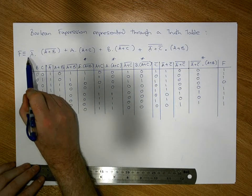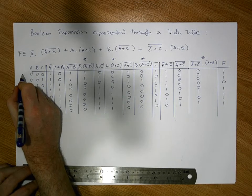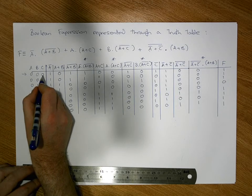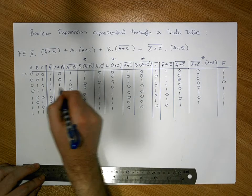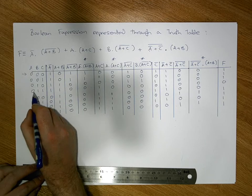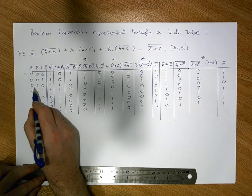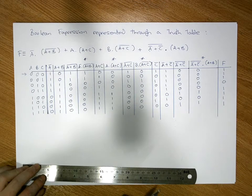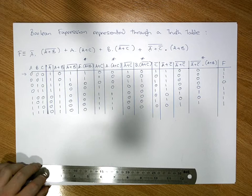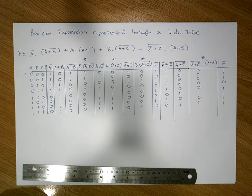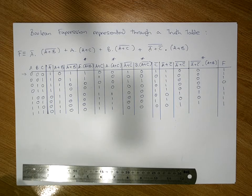What we've just constructed is the truth table for the Boolean expression called F. The output depends on the input values — for example, when A is zero, B is zero, and C is zero, the function gives one. When A is zero, B is one, C is one, the output is zero. A truth table gives us all the possible outputs from a particular expression considering all possible inputs. Thanks guys — this was Jonathan Lambert with the Mathematics Development and Support Service at the National College of Ireland. I hope this video was informative.